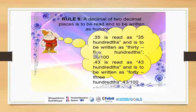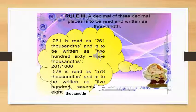For a decimal of two decimal places, it is to be read and written as hundredths. So we can read 0.35 as 35 hundredths, and 0.43 is read as 43 hundredths.